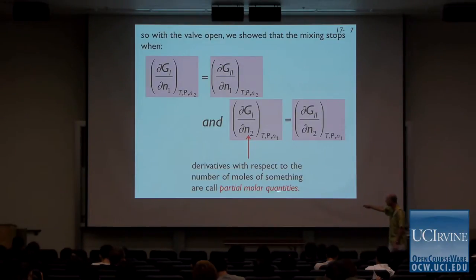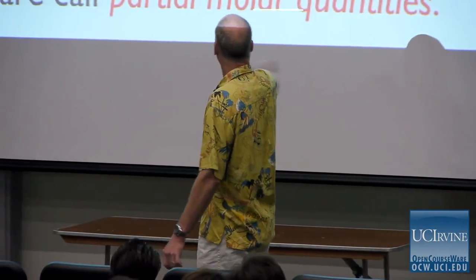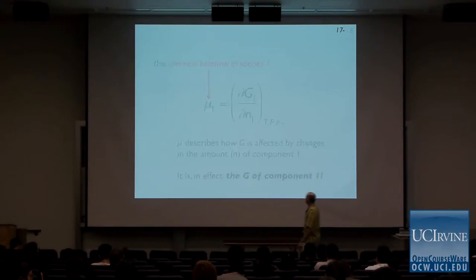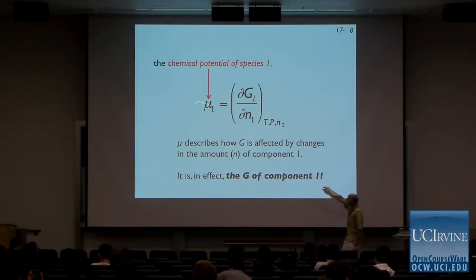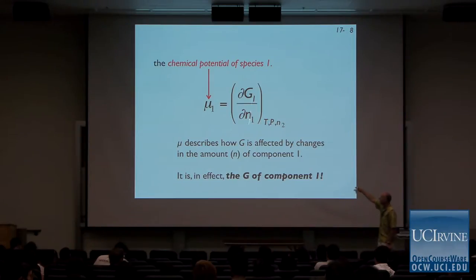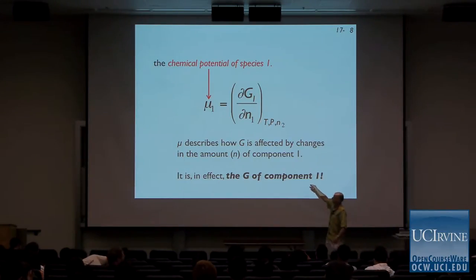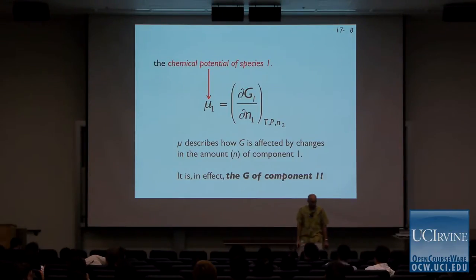These are so-called partial molar quantities. Whenever you take the partial derivative of a thermodynamic state function with respect to the number of moles of something, it's called a partial molar quantity — molar because you're taking the partial derivative with respect to the number of moles. The chemical potential is a special case of a partial molar quantity that involves the Gibbs energy. The partial of the Gibbs energy with respect to component one, two, or three would be the chemical potential of that component.